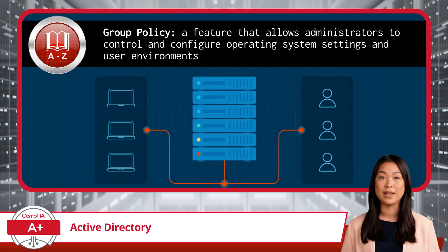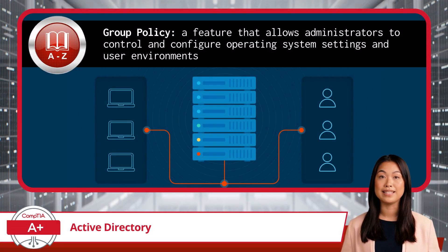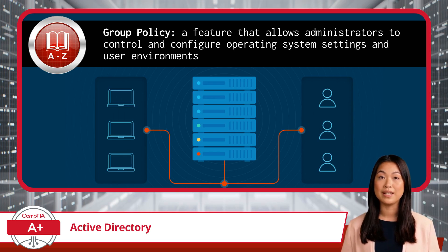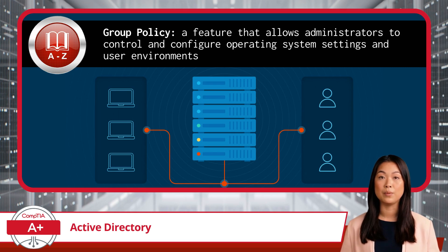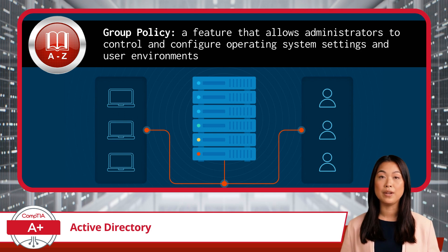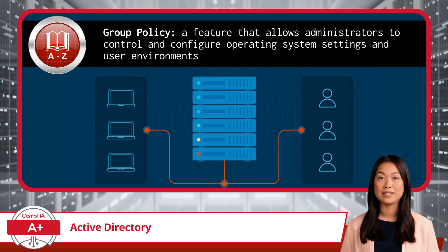One of the most powerful features within Active Directory is Group Policy. This feature allows administrators to control and configure operating system settings and user environments across all objects in a domain. For example, Group Policy can ensure that all workstations have the same network drives, printers, and configurations, enforce password length requirements, or even modify the default homepage for all the workstations in a company.